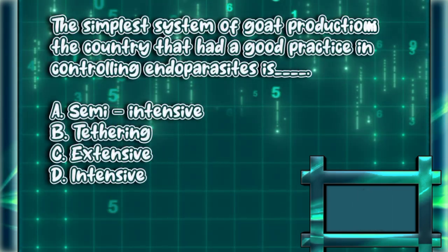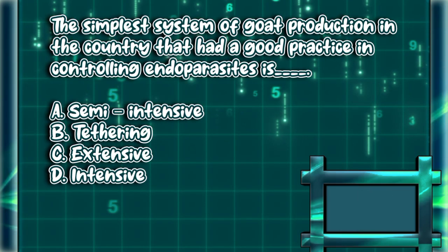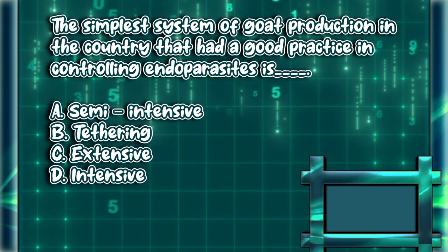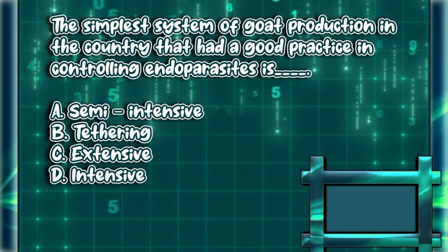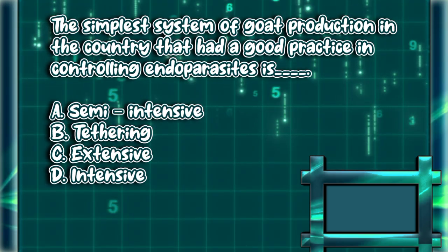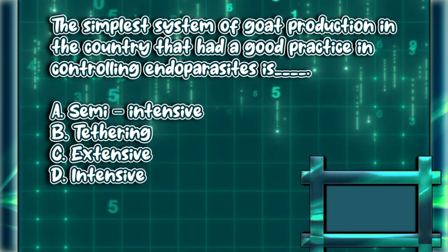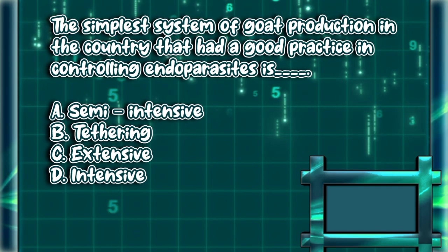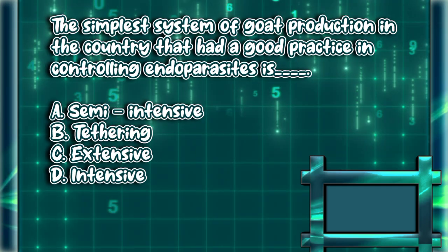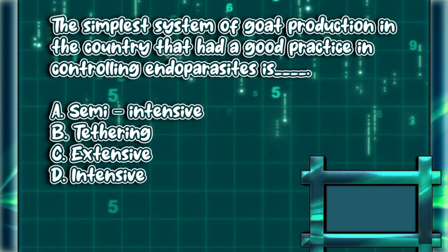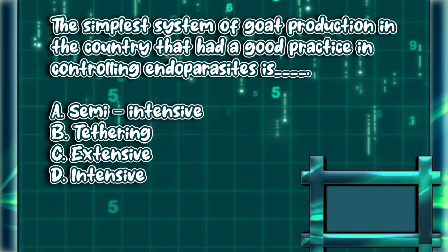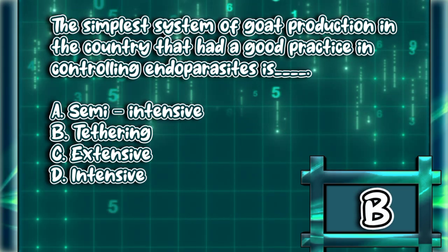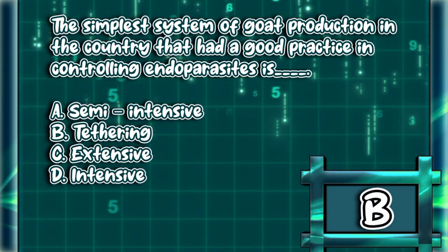The simplest system of goat production in the country that had a good practice in controlling endoparasites is: A. Semi-intensive. B. Tethering. C. Extensive. D. Intensive. The answer is letter B.